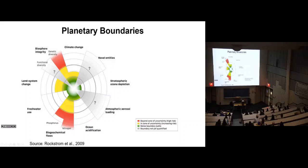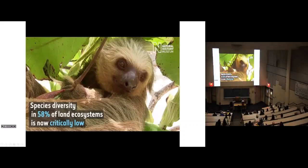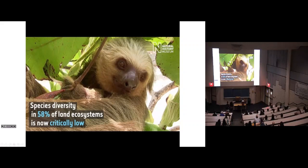Even if climate change didn't exist and temperatures weren't warming, we'd still have phosphorus pollution, nitrogen pollution, freshwater use issues, and biodiversity loss. Species diversity in 58% of ecosystems is critically low. By most ecologists' view, we're under a sixth mass extinction. We're losing insects, which are a canary in the coal mine — they're the base of the food chain. There's a region in China where bees no longer exist because of excessive pesticide use, so farmers hand-pollinate crabapple trees with earbuds. These beings are essential — we can't survive without them.